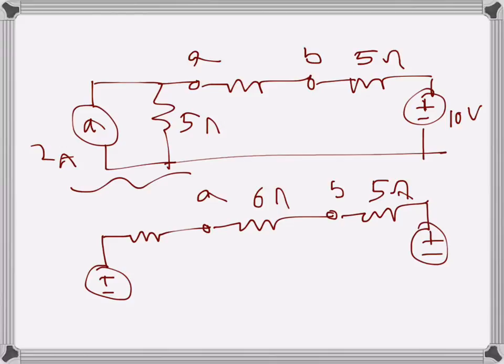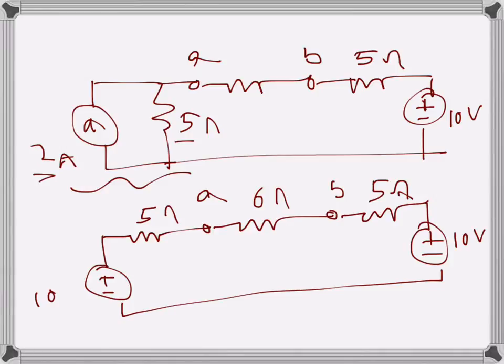This is 10 volts, and this converted part will be 5 ohms with a voltage source value of 2 times 5 = 10 volts. Now we have two voltage sources opposing each other with the same value. Since they are equal and opposing, the resultant EMF is zero.